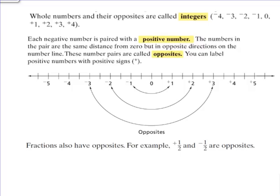Last year you learned that whole numbers and their opposites are called integers. Take a minute to write the definition of an integer in your C notes. Integers are the set of whole numbers and their opposites.